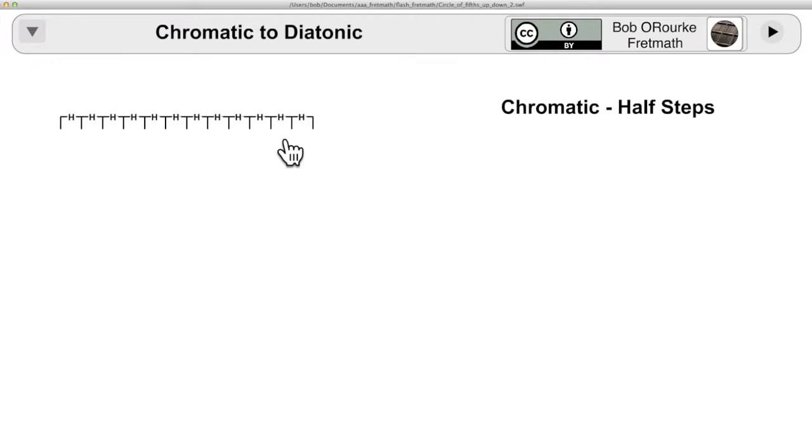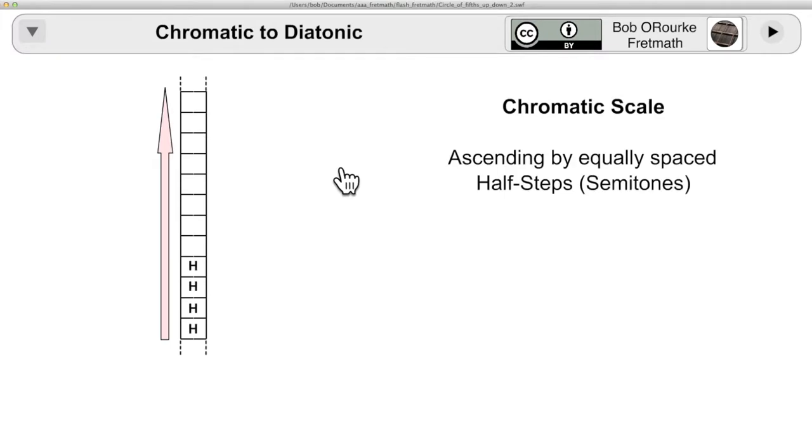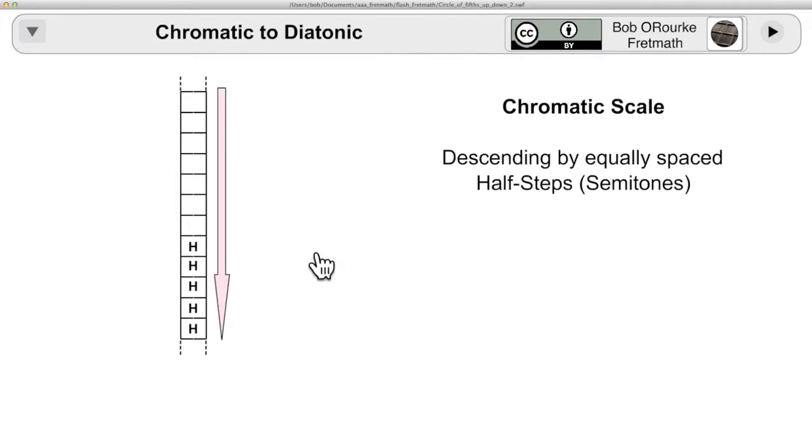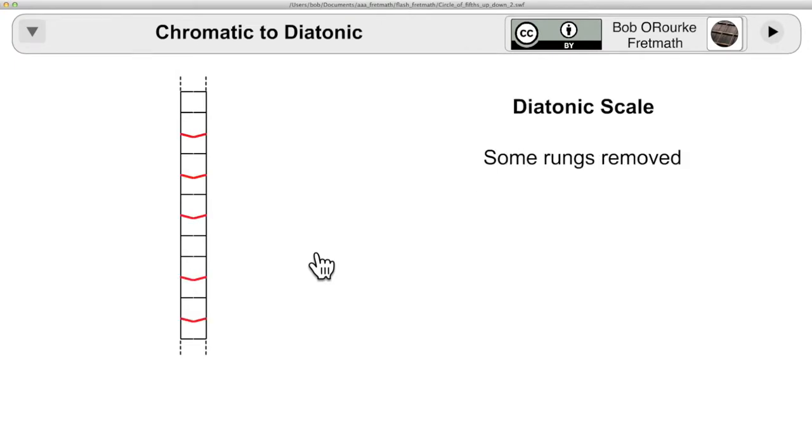Taking a little different look, starting with the chromatic sequence of half steps. It's turned vertical like a ladder, and here's the ascending chromatic, and the descending. And now you think of some of the rungs as being removed, and now there are two intervals, the half step and the whole step, in the major scale pattern.